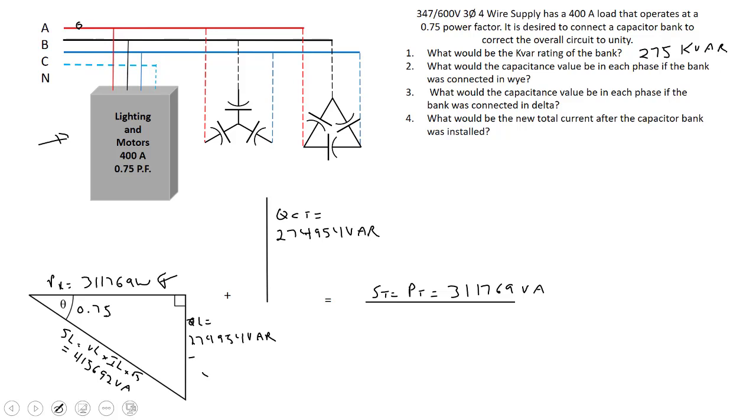Now we can move on to questions 2 and 3. What would the capacitance value be in each phase if the bank was connected in Y, and what would the capacitance value be in each phase if the bank was connected in delta? I'm going to use some space here to remember back some single-phase power formulas. If you recall the PIRE wheel, basic power formula: power equals volts times current.